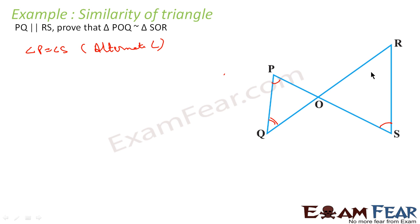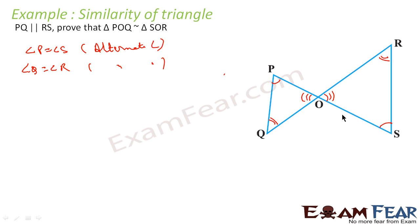Similarly, angle Q is equal to angle R — alternate angle. And angle POQ is equal to angle ROS because they are vertically opposite angles.